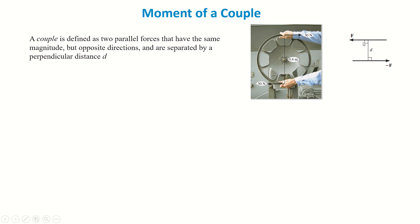A moment is produced due to a couple, and that is called a moment due to couple. Some practical examples of couple forces and the moment produced are shown. When you turn a wheel with both hands, you are applying two forces which are equal but opposite, and they are separated by a perpendicular distance.